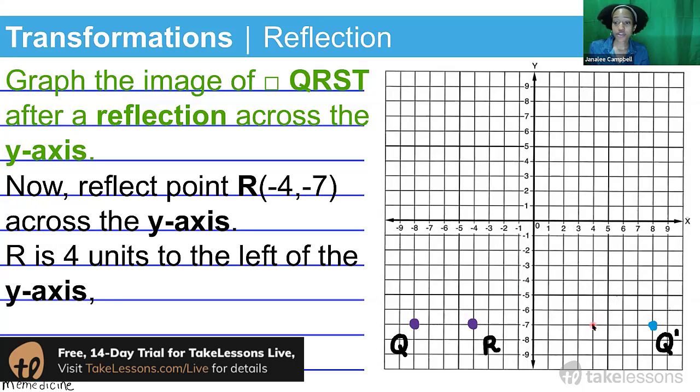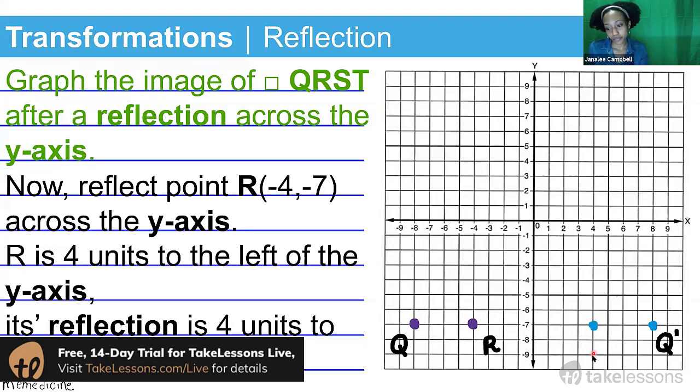When you're flipping or reflecting about the y-axis, all you're doing is moving equidistantly with respect to the y-axis. And in order to do that, all you're going to do is change the x-coordinate. So its reflection has to be four units to the right of the y-axis. This is going to be R prime because we shifted our original point R through reflection on the other side of the y-axis.